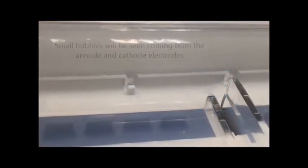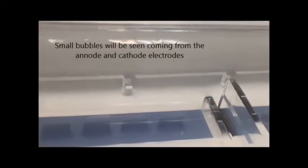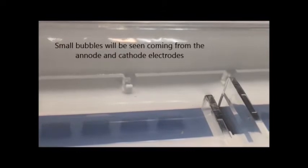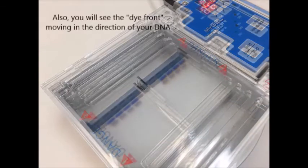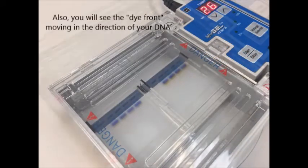When current is running through the buffer, small bubbles can be seen coming off of the anode and cathode electrodes in either side of the gel tank. Also, you will see that the dye front will be moving in front of your DNA.